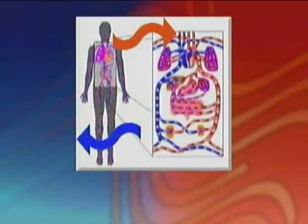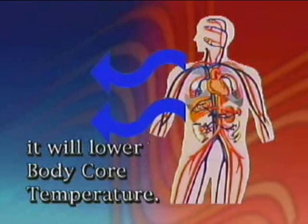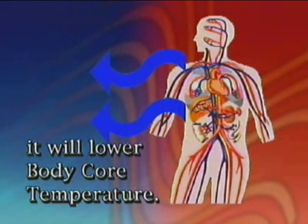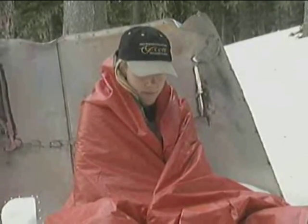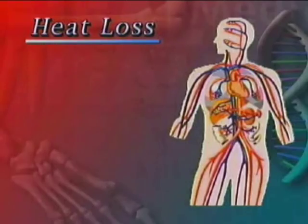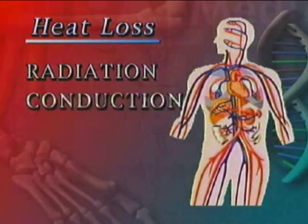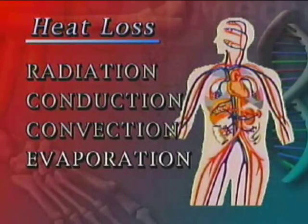However, if heat is lost from the body too quickly, it will lower body core temperature. As the body core temperature drops, so does mental and physical efficiency. Heat is lost from the body through four different mechanisms: radiation, conduction, convection, and evaporation.